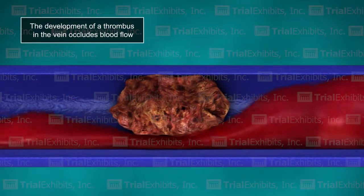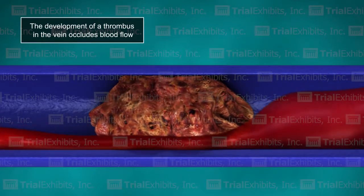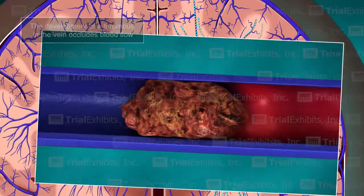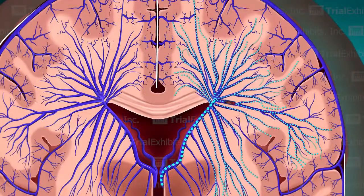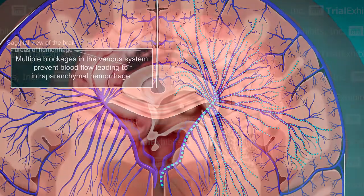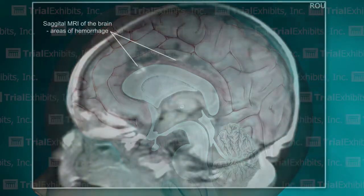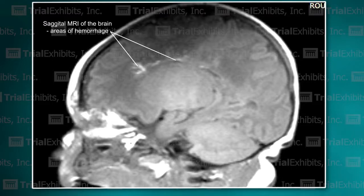As a result of these tiny blockages, we animated the development of a small area of hemorrhage typical of these blockages. Once the regions of hemorrhage had been established, we rotated our image and faded to a view of the actual MRI from this case, showing that the film evidence clearly supports this theory of deep medullary thrombosis.